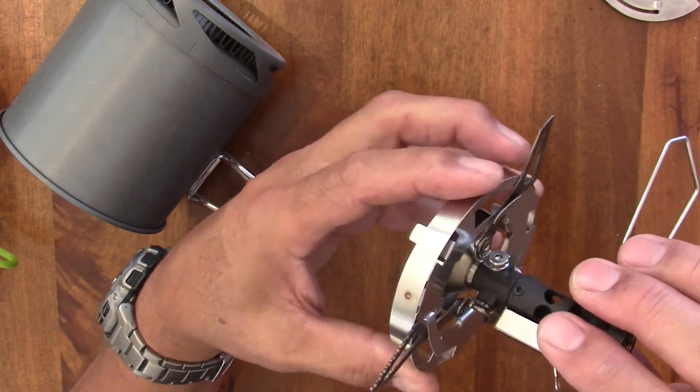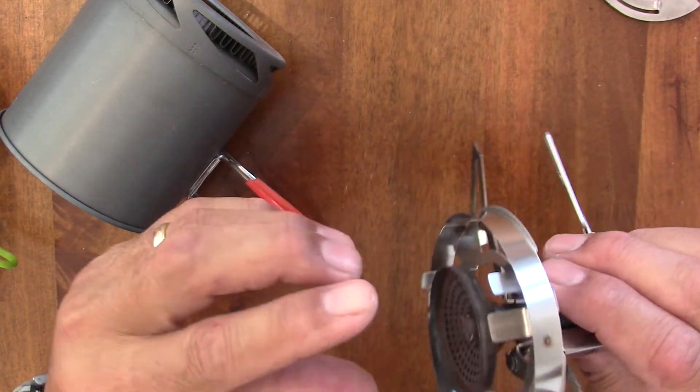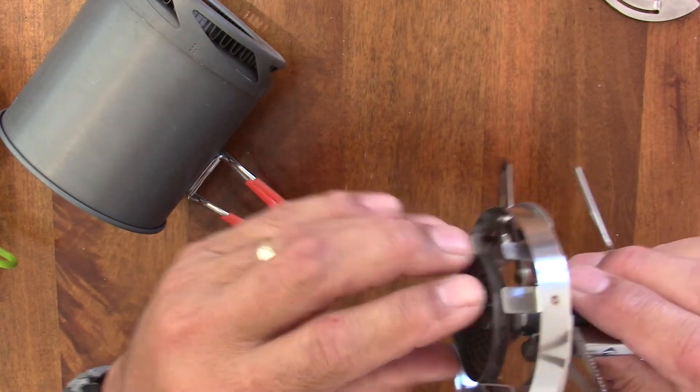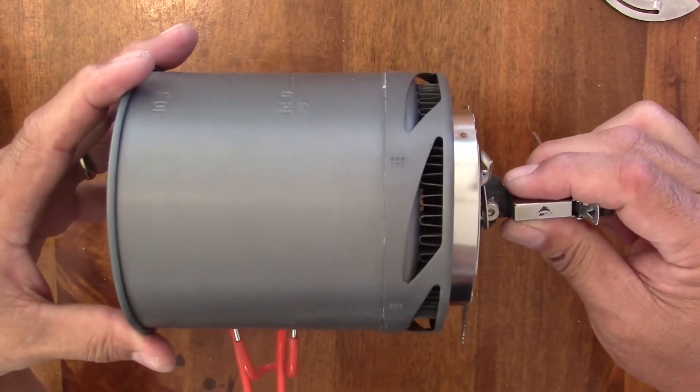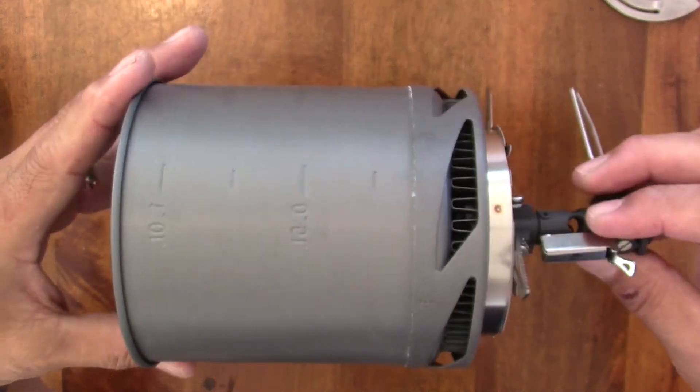So again, it's kind of a bayonet mount. You drop the stove in, rotate it, sets the burner head at the right distance and lines up to the pot, and you've got perfect integration.